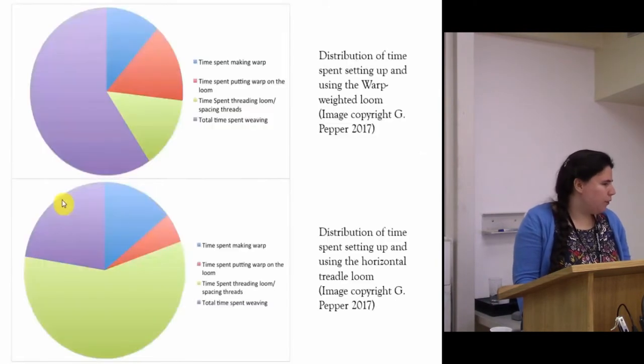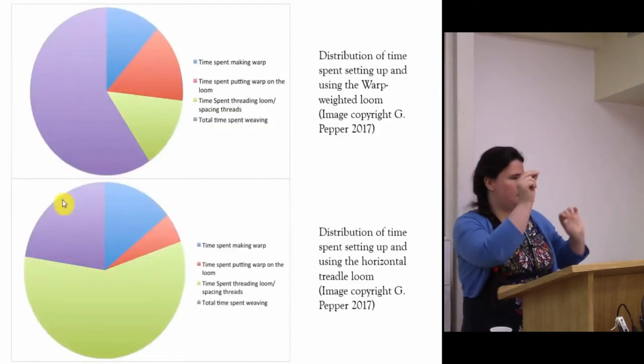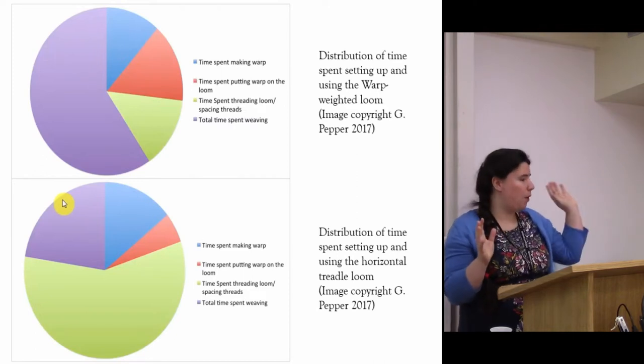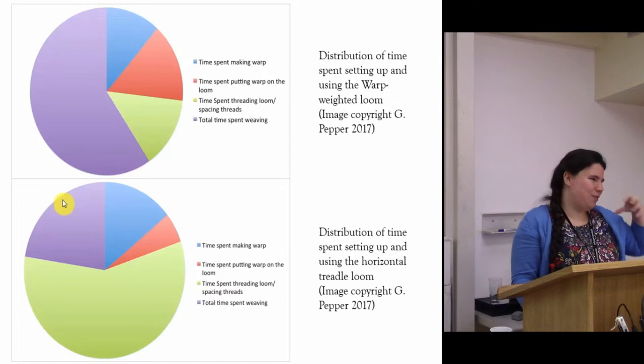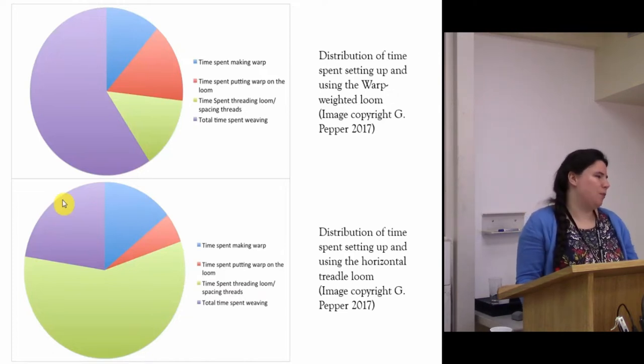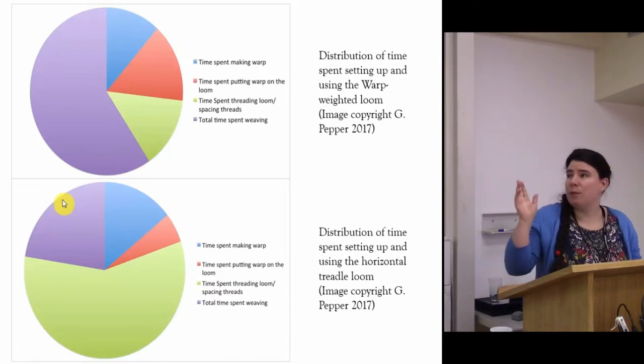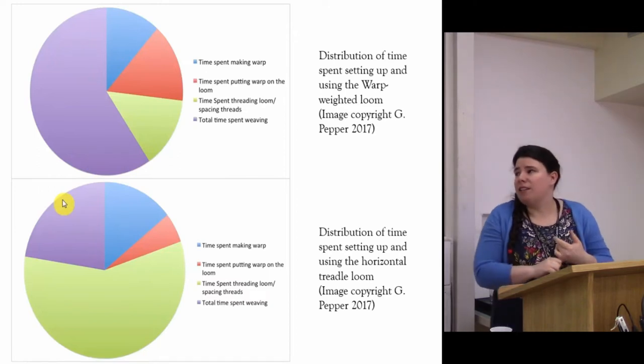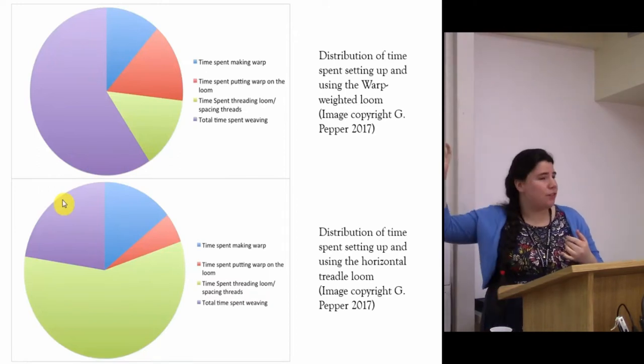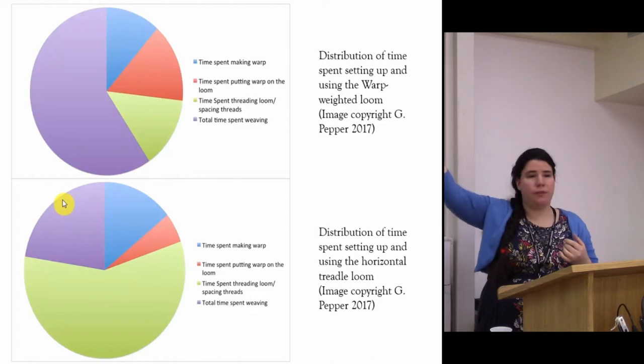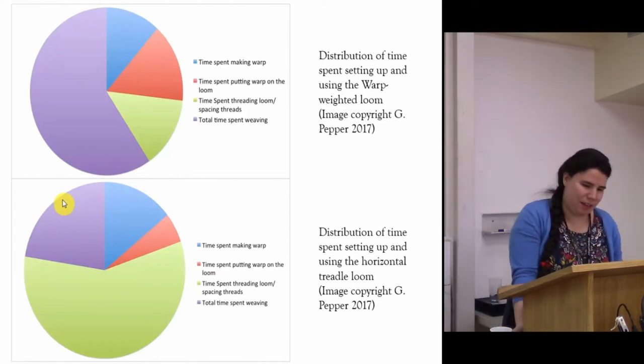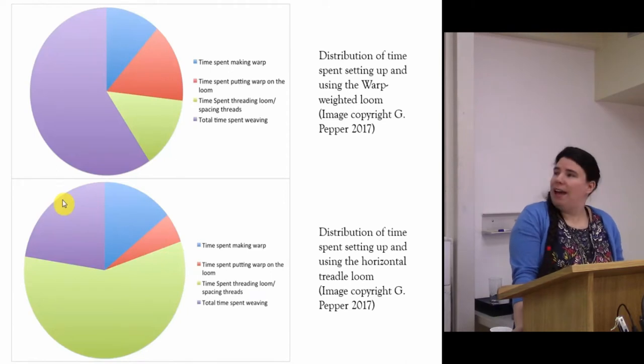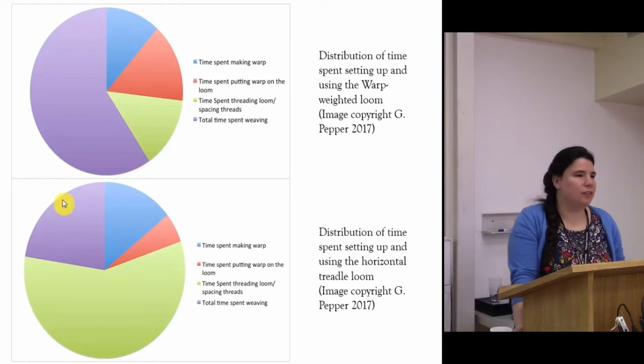If you convert the percentage of time spent on the different stages of setup, as I've done in these pie charts, you can see these differences more clearly. The purple pie segment is the time spent weaving. You can see it takes up the majority of time in the top chart. That's for the warp-weighted loom, which is the earlier loom used in the Anglo-Saxon period.